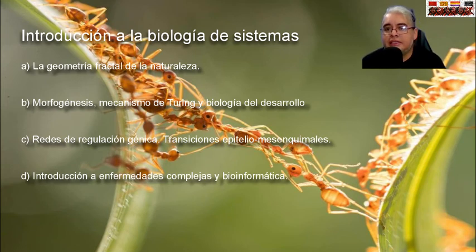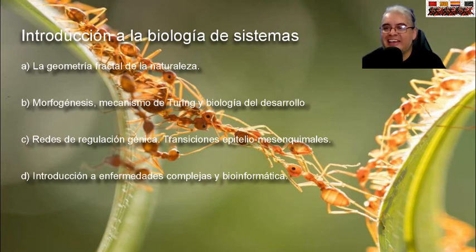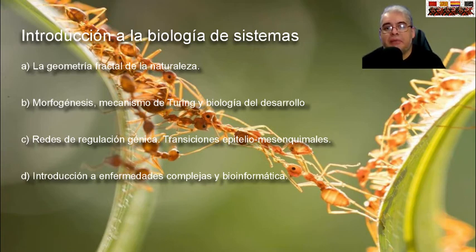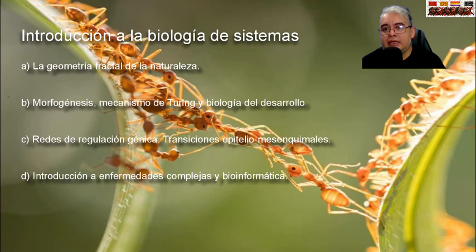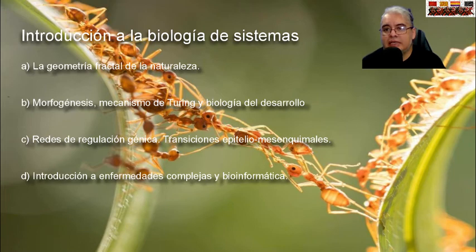Daremos una introducción a la biología de sistemas hacia el final del curso, donde abordaremos el uso de fractales para tratar de explicar las formas naturales, así como un poco del abuso de la fractalidad como explicación. También veremos los mecanismos morfogenéticos que propusieron Turing y otros, una introducción a la biología del desarrollo, redes de regulación génica, y las transiciones epitelio-mesenquimales. Al final del curso nos moveremos hacia el estudio del cáncer, dando una introducción a enfermedades complejas y al uso de herramientas informáticas en su estudio.